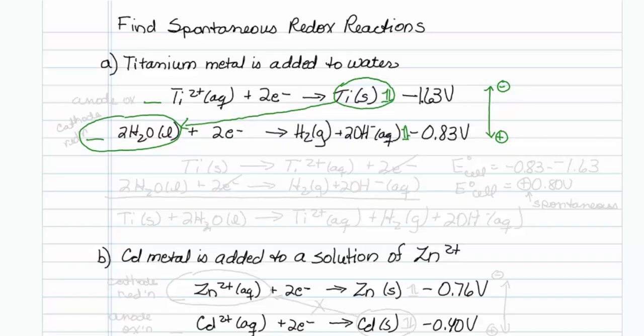So I can take my top reaction, this is going to be my anode, and oxidation will occur, so I will flip it. This will be my titanium going to titanium 2+ aqueous plus 2 electrons.